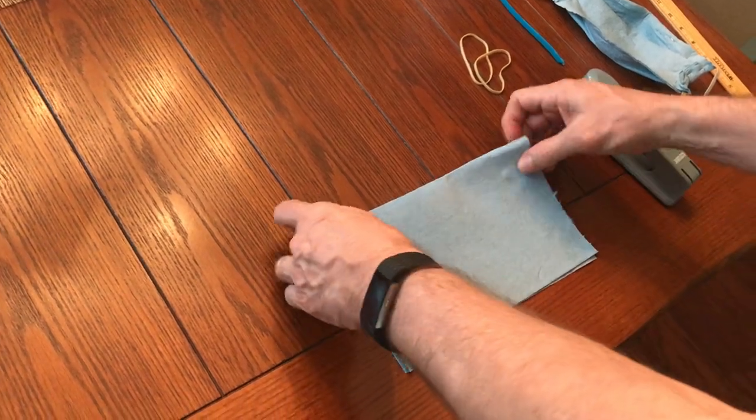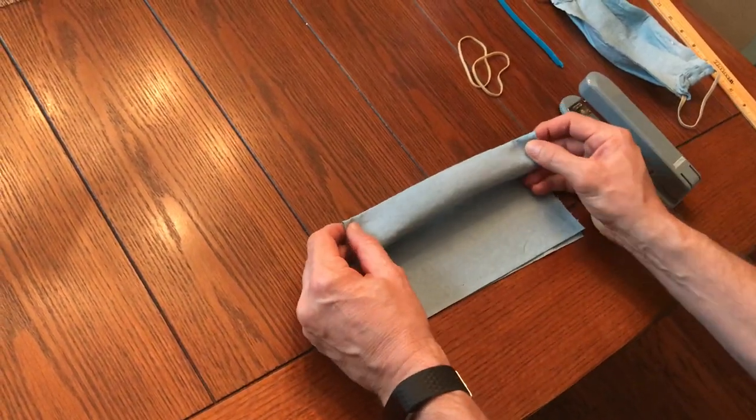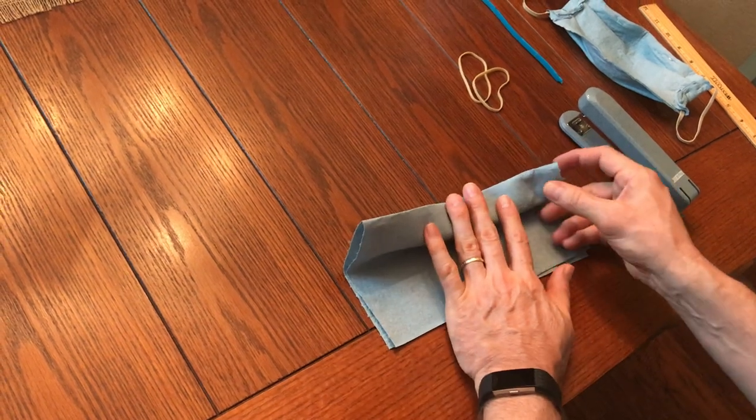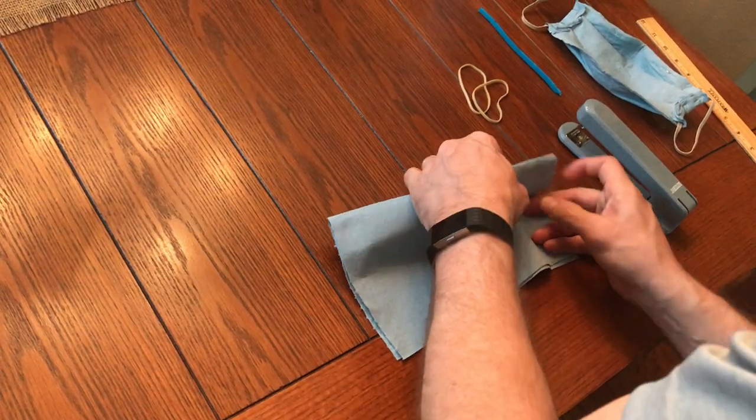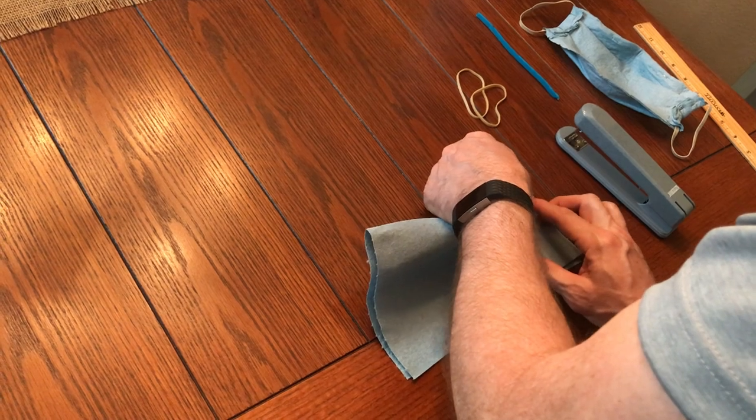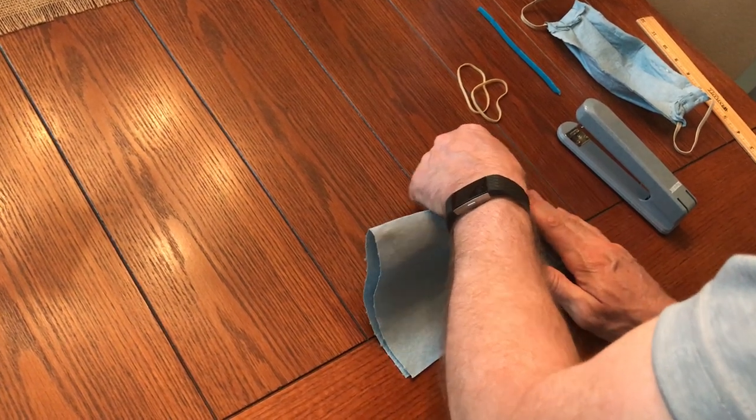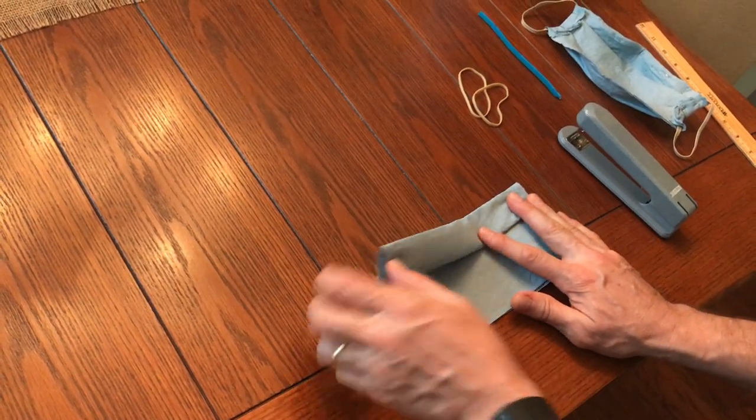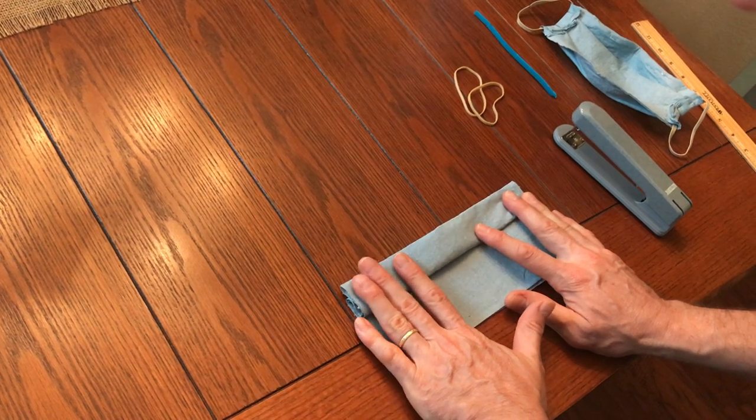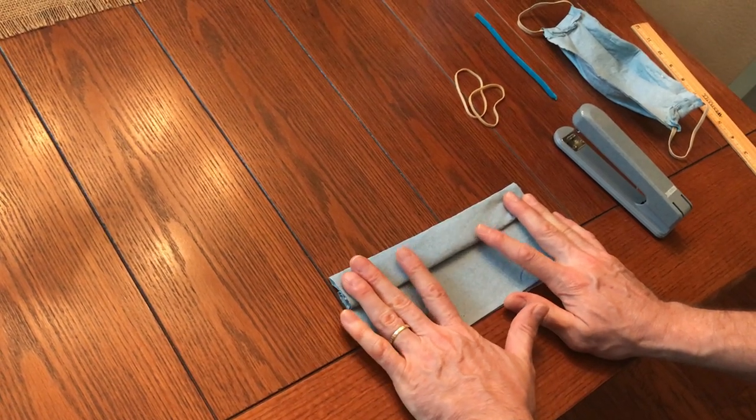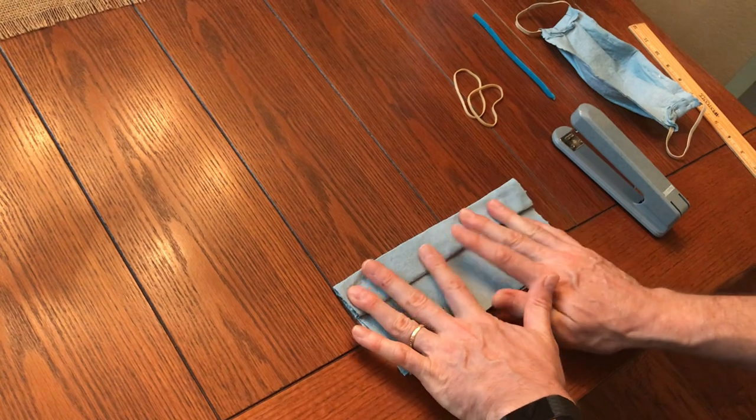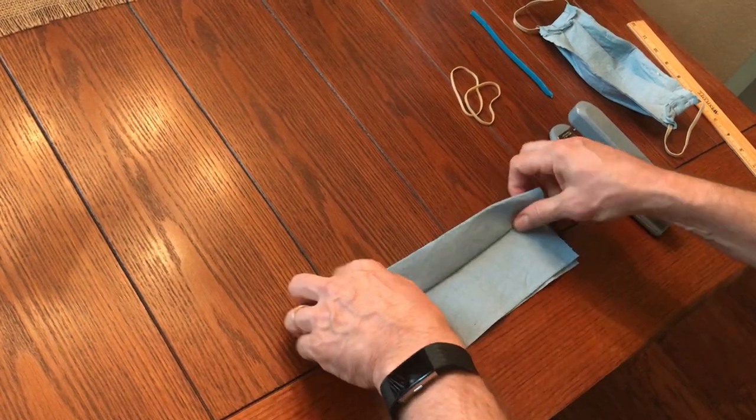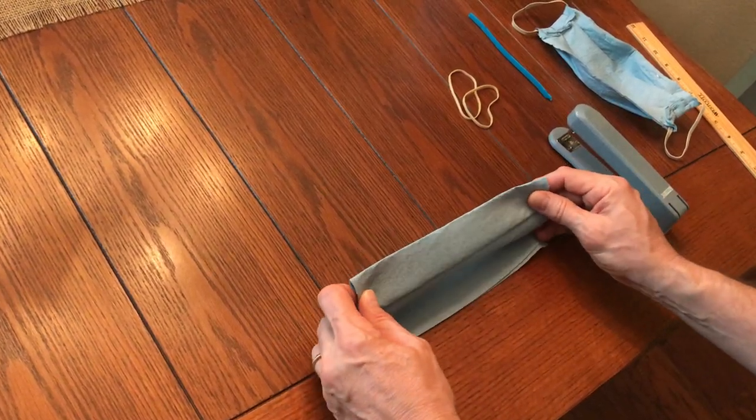Fold it right in half on the short edge there. Then we'll make pleats at about an inch or so with about a half inch back. And you can just eyeball these, try to get them to be parallel and just make two of these pleats.